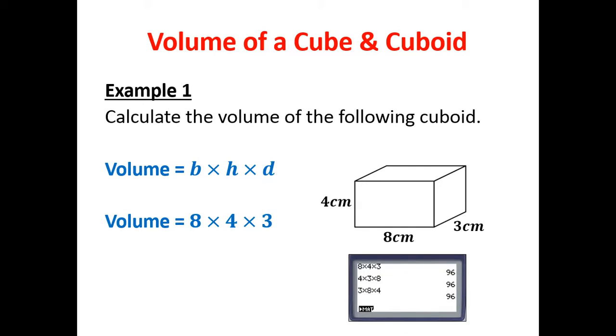Let's grab a calculator. Notice it doesn't matter which way you multiply the numbers. 8 times 4 times 3 gives 96. But if I go 4 times 3 times 8, I still get 96. And even if I go 3 times 8 times 4, I still get 96. When you multiply numbers, order is not important. So the volume of this cuboid is 96 centimeters cubed.